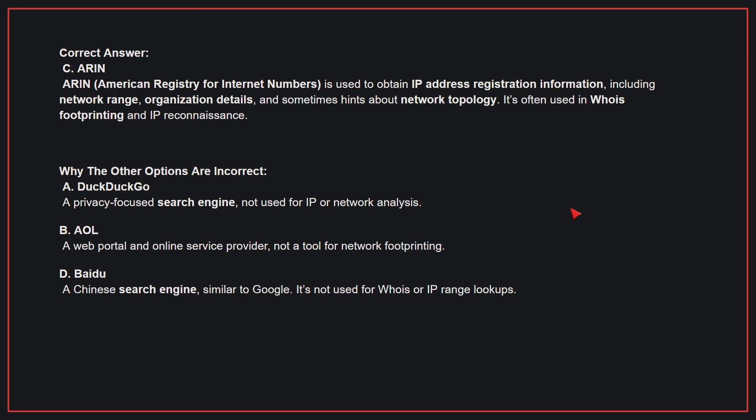Why the other options are incorrect: A — DuckDuckGo. This is a privacy-focused search engine, not used for IP or network analysis. B — AOL. This is a web portal and online service provider, not a tool for network footprinting. D — Baidu. This is a Chinese search engine, similar to Google; it's not used for WHOIS or IP range lookups. Therefore, the correct answer is C.